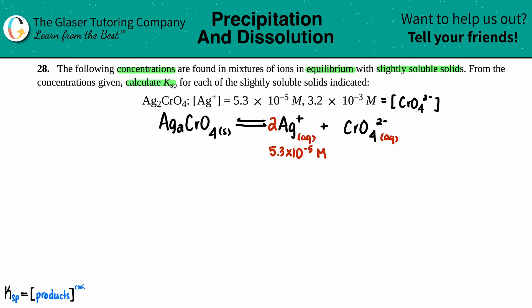Whatever they told you was the concentration, that's what you have. You don't have any more and you don't have any less. So just take it for what it is. And then the chromate ion is 3.2 times 10 to the negative third molarity.